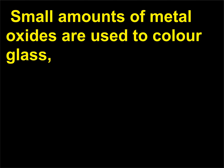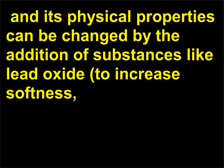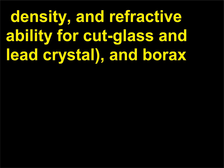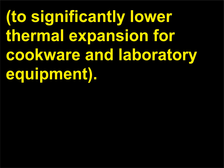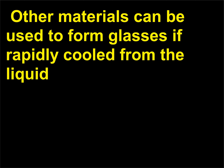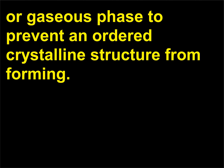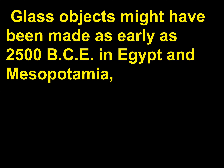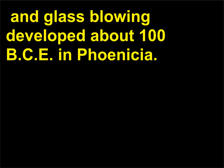Small amounts of metal oxides are used to color glass, and its physical properties can be changed by the addition of substances like lead oxide to increase softness, density, and refractive ability for cut glass and lead crystal, and borax to significantly lower thermal expansion for cookware and laboratory equipment. Other materials can be used to form glasses if rapidly cooled from the liquid or gaseous phase to prevent an ordered crystalline structure from forming. Glass objects might have been made as early as 2,500 BCE in Egypt and Mesopotamia, and glass blowing developed about 100 BCE in Phoenicia.